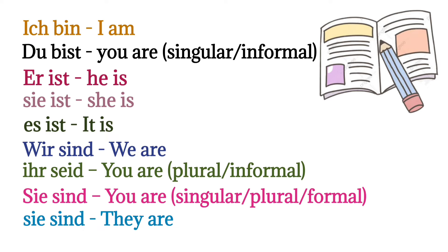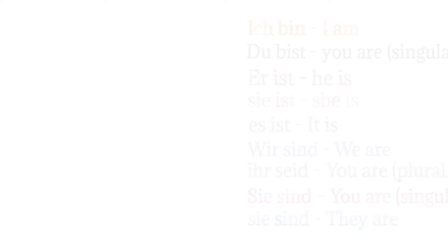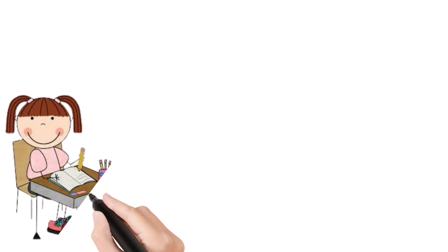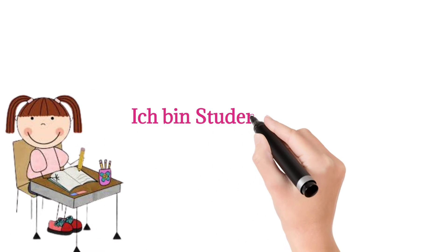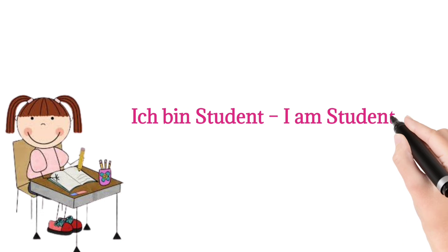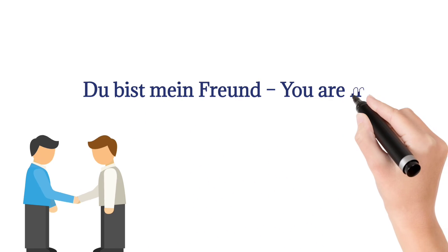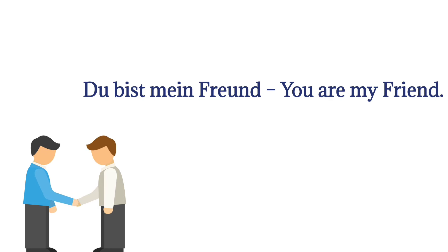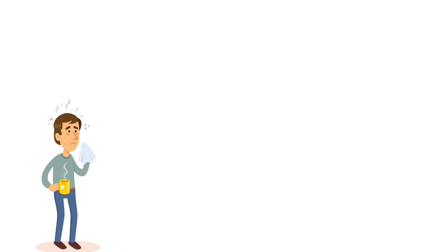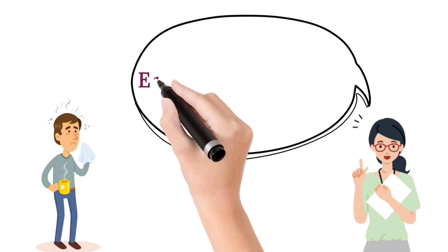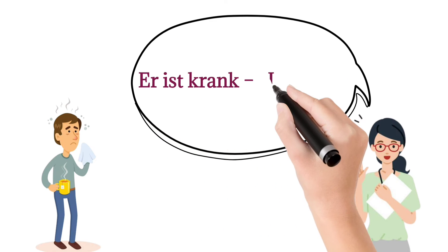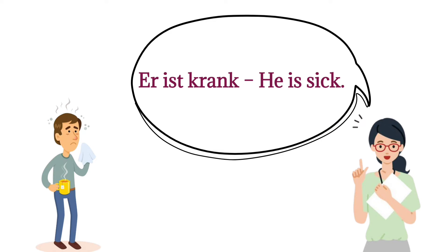So this is the verb conjugation used with subjects. Let's see some examples: 'Ich bin Student' — I am a student. 'Du bist mein Freund' — you are my friend. 'Er ist krank' — he is sick.